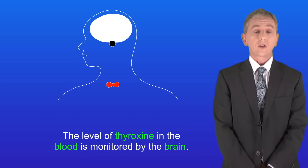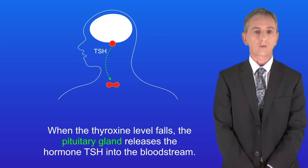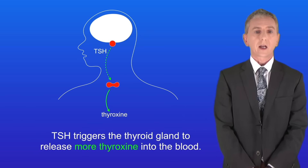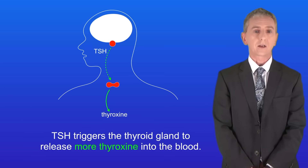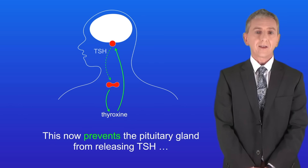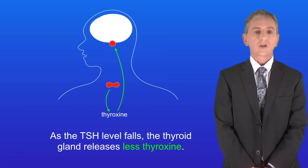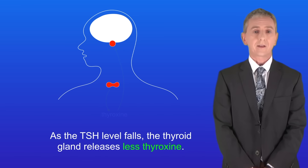The level of thyroxine in the blood is monitored by the brain. When the thyroxine level falls, the pituitary gland releases the hormone TSH into the bloodstream. TSH triggers the thyroid gland to release more thyroxine into the blood. The increased level of thyroxine is then detected by the brain, and this prevents the pituitary gland from releasing TSH. As the TSH level falls, the thyroid gland releases less thyroxine.